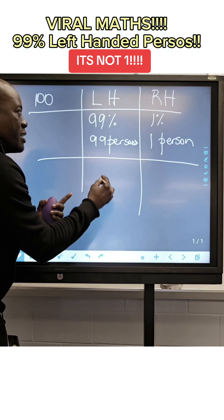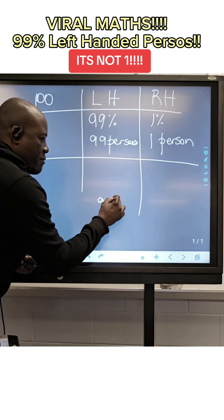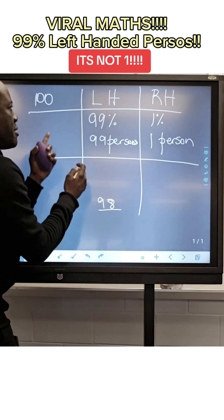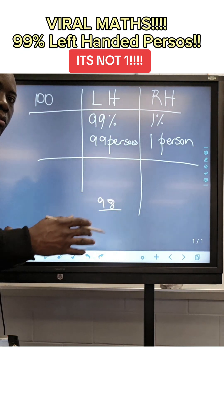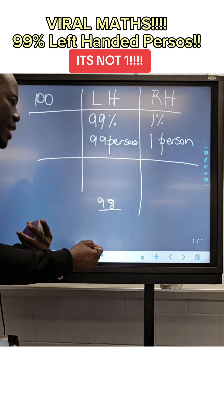So if one left-handed person would have left, you would have had 98. And this 100 would have now changed to 99 people. Because if one person left the room, there's a total of 99.